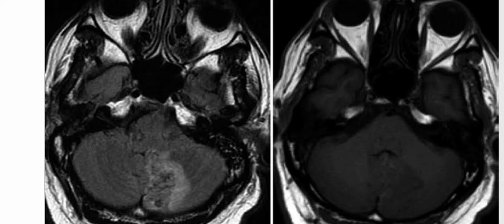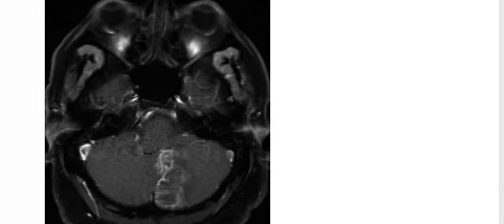Next case: a 52-year-old man presenting with headache and new onset gait disturbances for one week. The axial FLAIR MRI shows a wedge-shaped region of heterogeneously increased signal intensity within the inferomedial left cerebellar hemisphere. On the corresponding axial T1-weighted image, this area is hypointense, and on the post-contrast sequence there is peripheral gyral enhancement within this lesion.